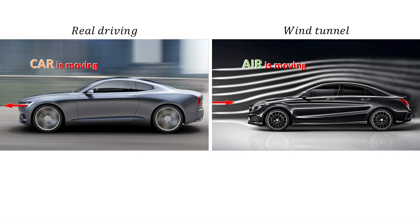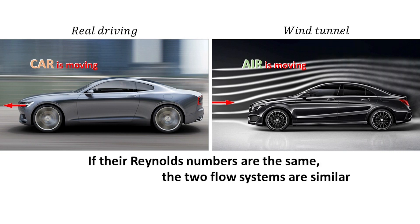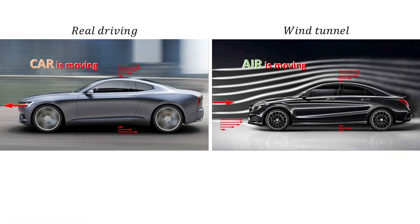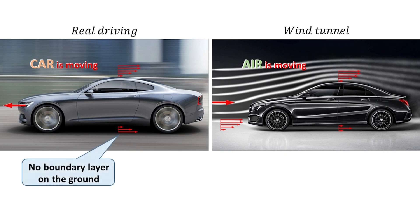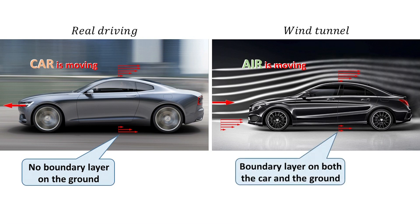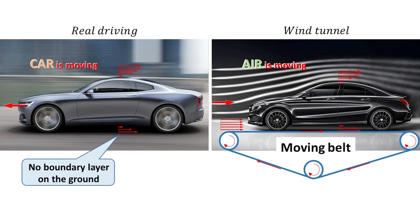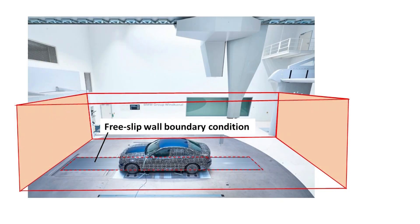These two flow systems are similar if we keep the Reynolds number of the two flows the same. However, in reality when the car is running through still air, the boundary layer will only form on the car surfaces and not on the ground. But in the wind tunnel test, the boundary layer forms on both the car surfaces and the ground surface. Therefore, engineers incorporate a moving belt in the wind tunnel test to eliminate the boundary layer on the ground. In CFD, this can easily be achieved by setting the moving belt surface as the free-slip wall boundary condition so that no velocity gradient will form on that region of the floor.